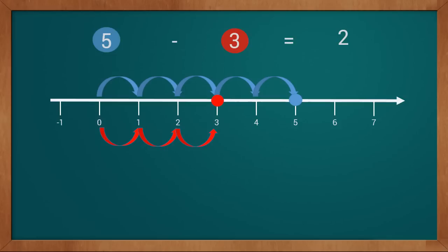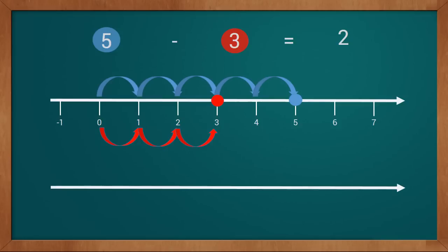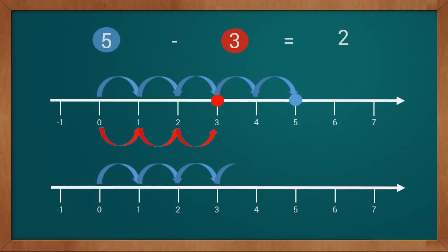Now we will see how to subtract using the number line. Our problem is five minus three equals two. Our first value is five, so we draw a point at five: one, two, three, four, five. Now we have a minus sign — we have to subtract three from five. For subtraction, we move in the backward or left direction.